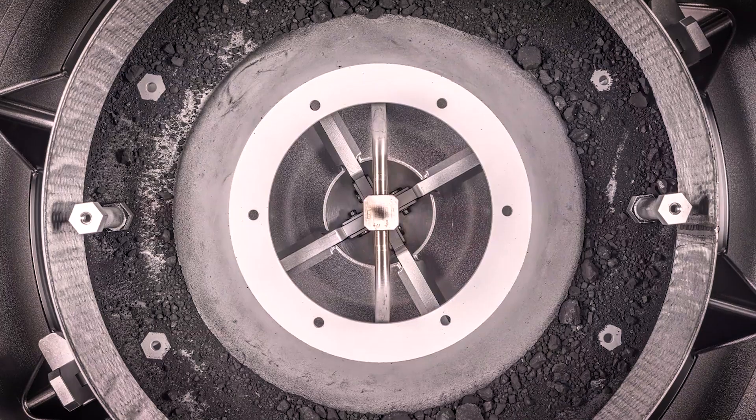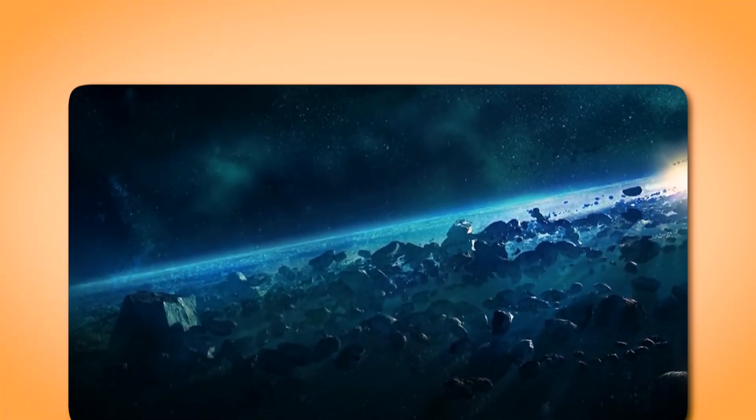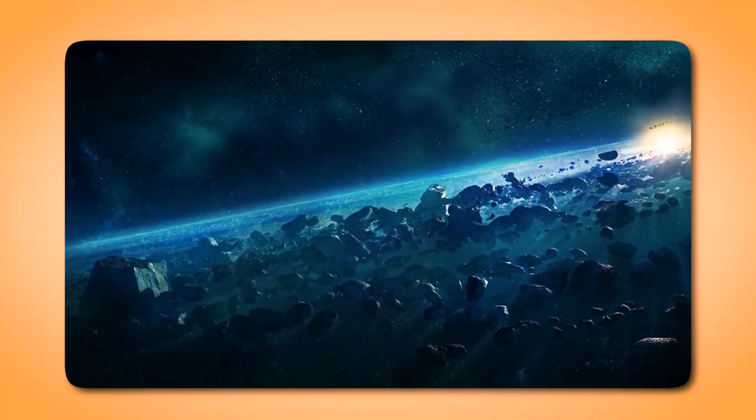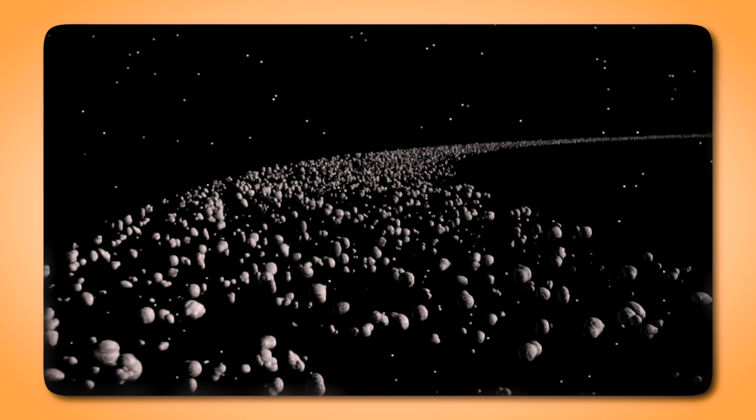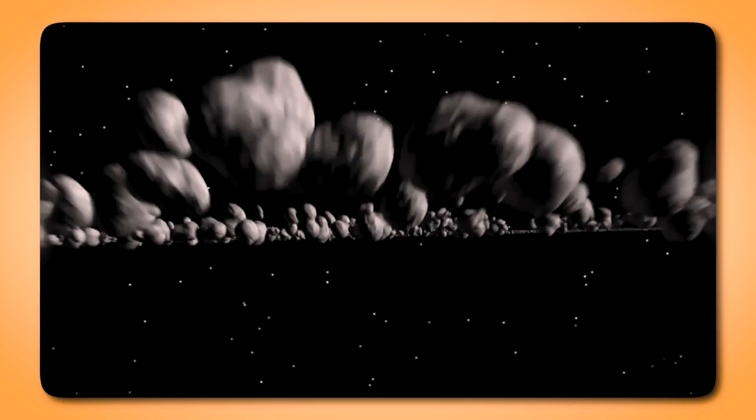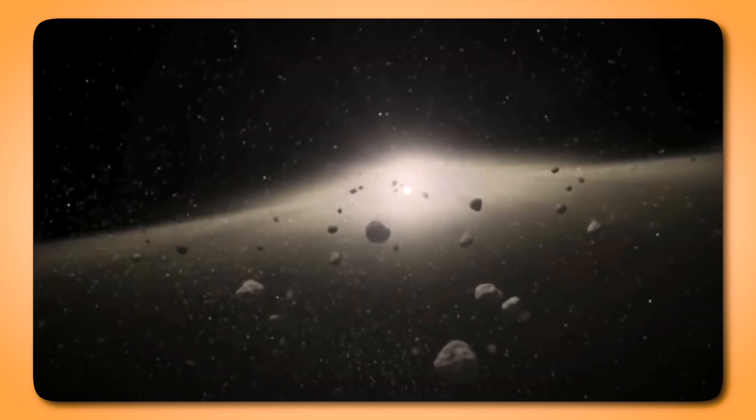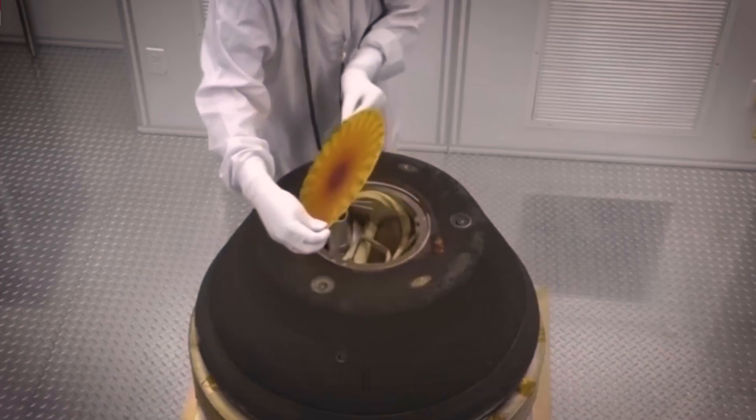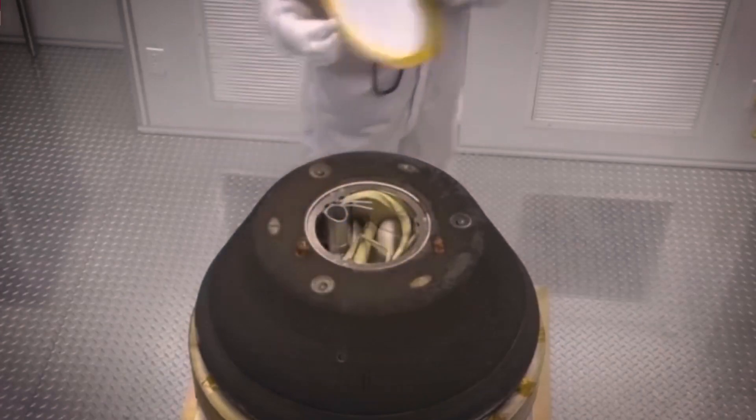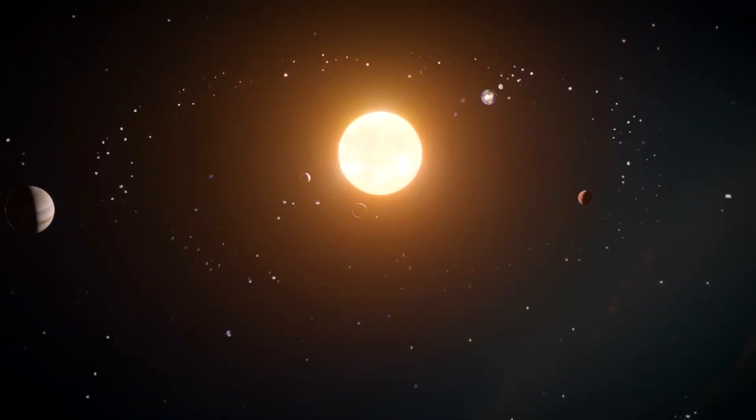So, why is this asteroid sample so special? Imagine holding a fragment of the early solar system, a relic brimming with clues about the origins of life and the formation of planets. The material from Bennu contains pre-solar grains, microscopic crystals that predate the sun itself. These grains preserve the signatures of ancient stars that lived and died long before our solar system existed. By analyzing the composition of these pre-solar grains, scientists can uncover details about the types of stars that once illuminated the cosmos.